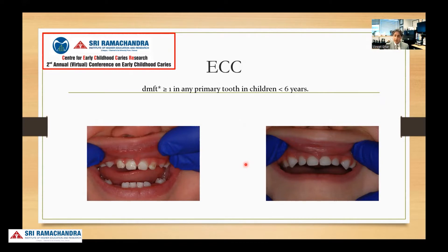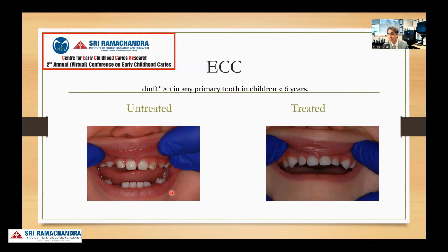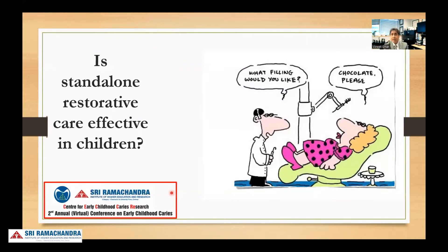Caries risk is a continuum. You have to follow up on it, see what changes happen in their lifestyles, and when the risk could go back up — moderate or low or high. That needs to be tracked very carefully to discern whether the child is high, low, or moderate risk. Only untreated or treated lesions are not enough. Restorative care would be great and it has its place, but we need to know: have we done enough if we have done restorative care for a child? Do we need to do anything else? The question really is: is standalone restorative care effective in children?